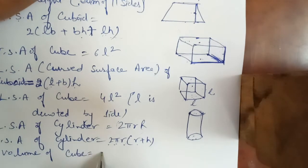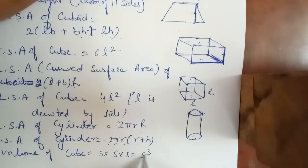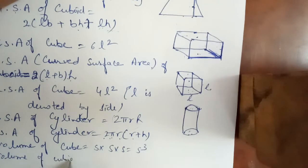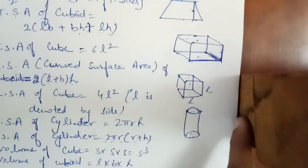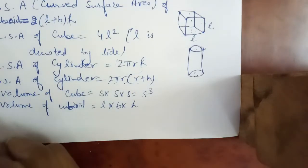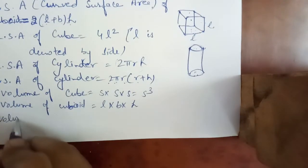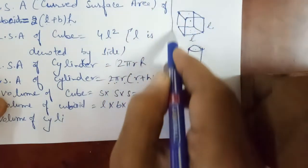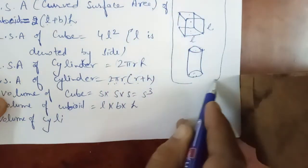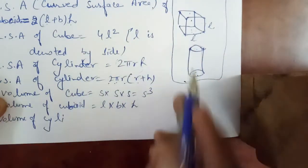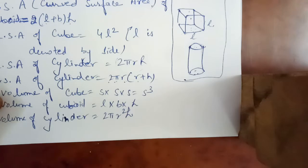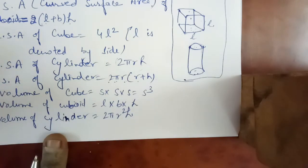Volume of cube होता है side into side into side, that is side cube. Volume of cuboid is length into breadth into height. इनको 3D shape figures या 3 dimensional figures बोलते हैं — मतलब इनमें length, breadth और height सभी होते हैं, इसलिए इनको 3 dimensional figures बोलते हैं. Volume of cylinder होता है πr²h. ये main formulas हैं according to this exercise.